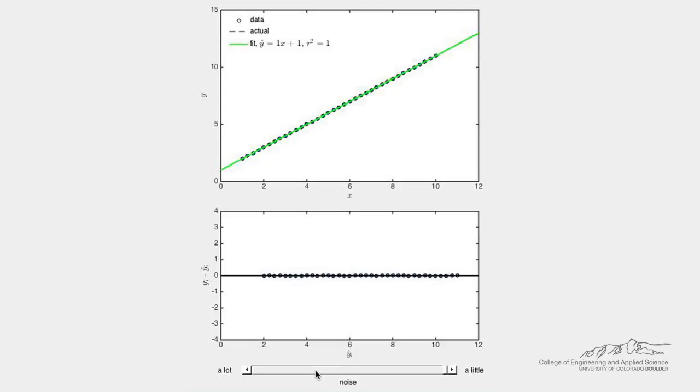Adjust the amount of noise in the data with the slider bar and observe the effect it has on the line of best fit and the r squared values.